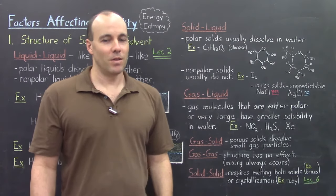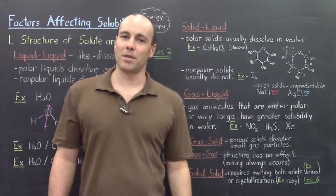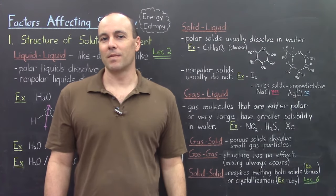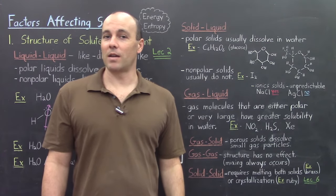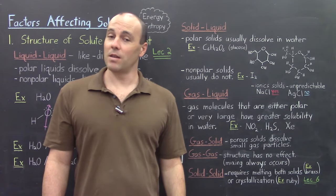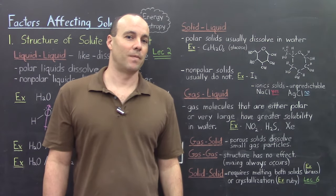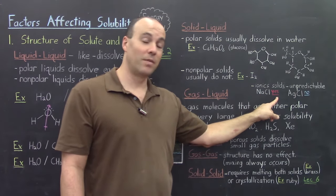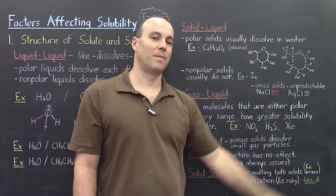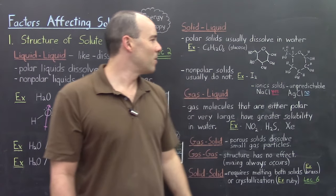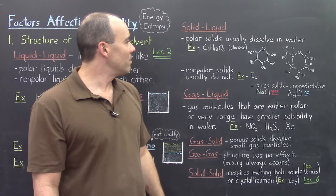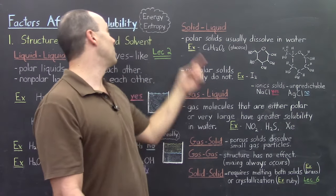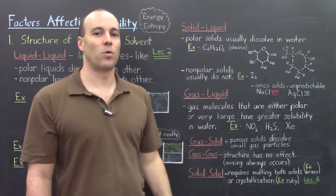You normally don't need to memorize the solubility chart, but it's good to be aware of a few of the more common ions. For instance, if an ionic compound contains the sodium cation, it pretty much always dissolves in water. An example is sodium chloride, which does dissolve in water, but silver chloride does not. So the structure definitely affects the solubility, and it's explained mostly through the energetics — the forces of interaction.